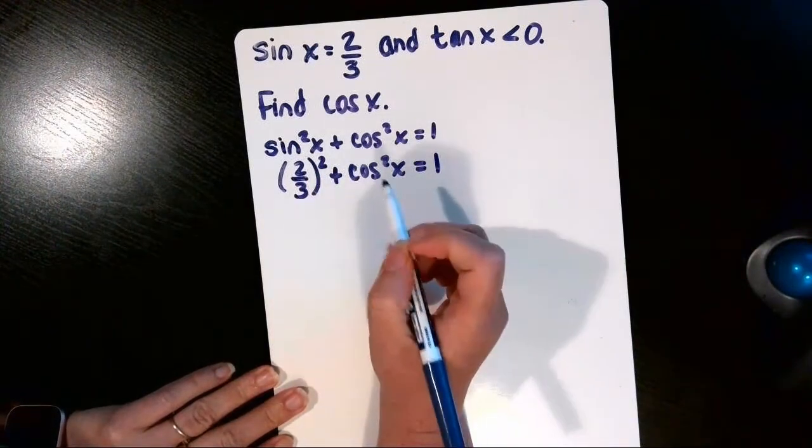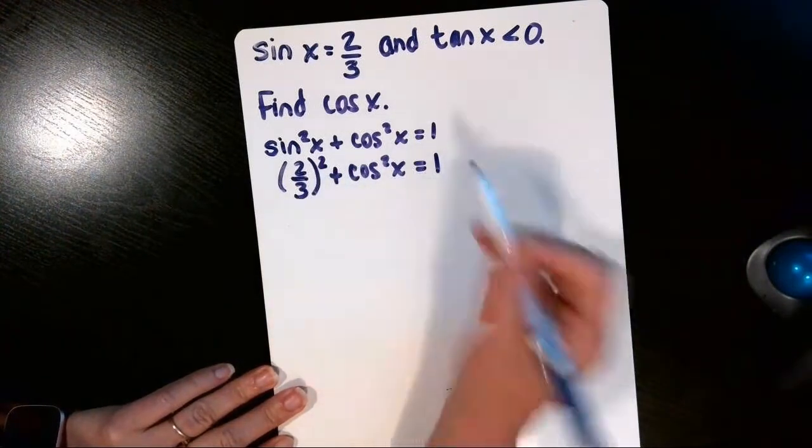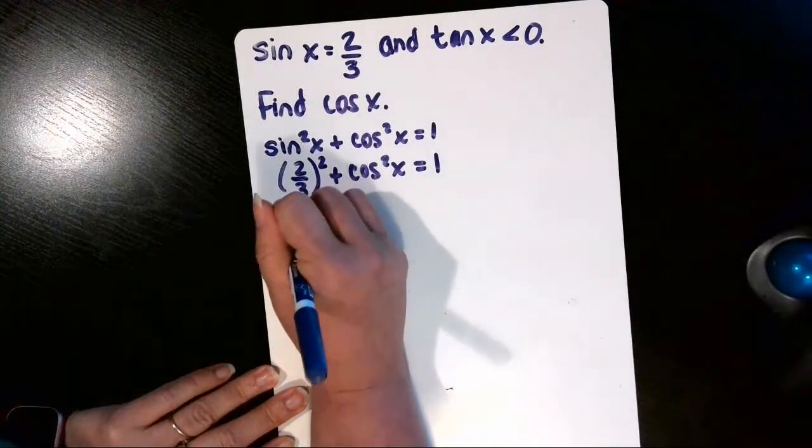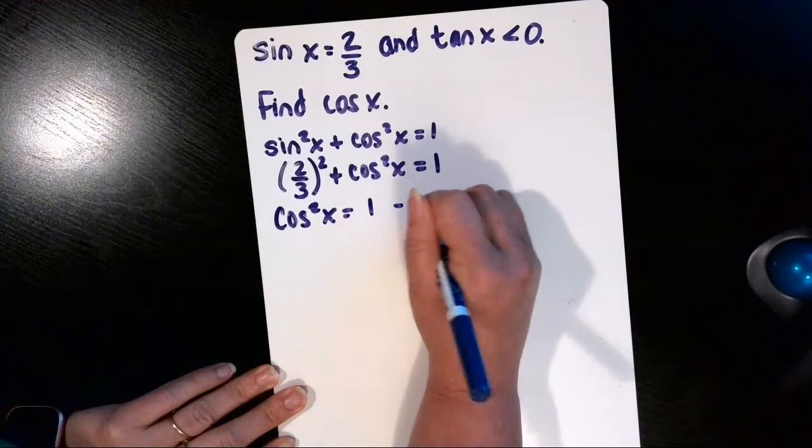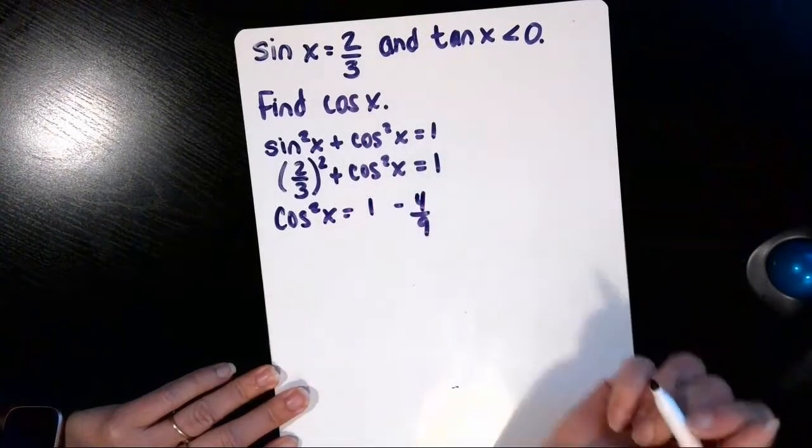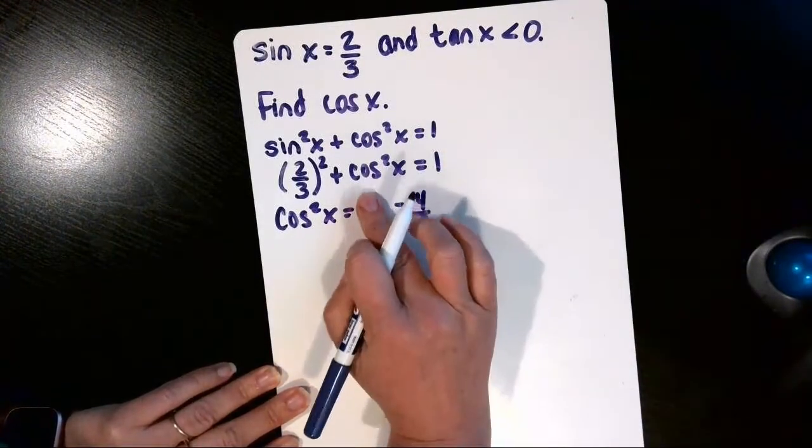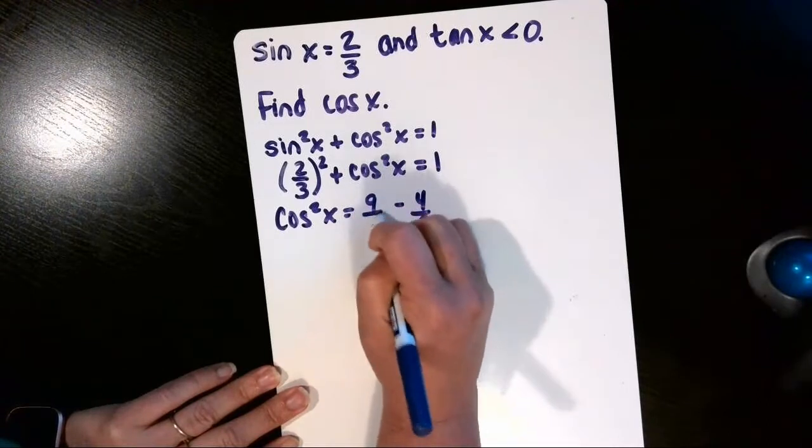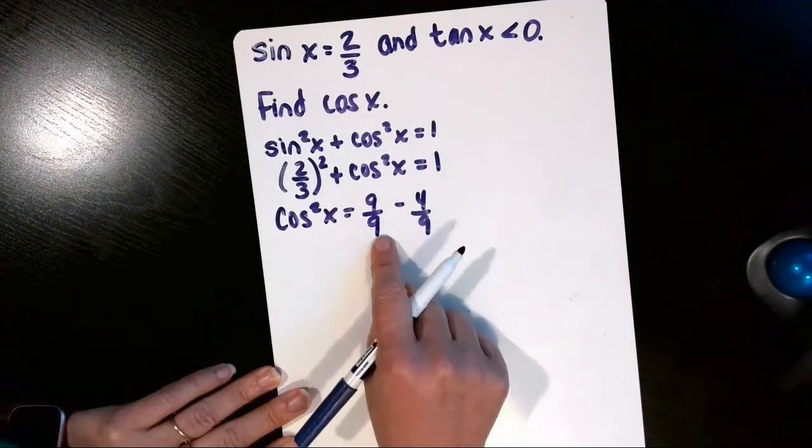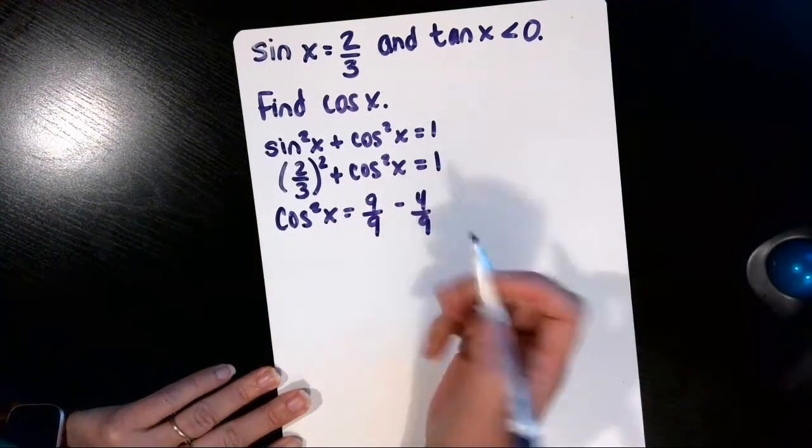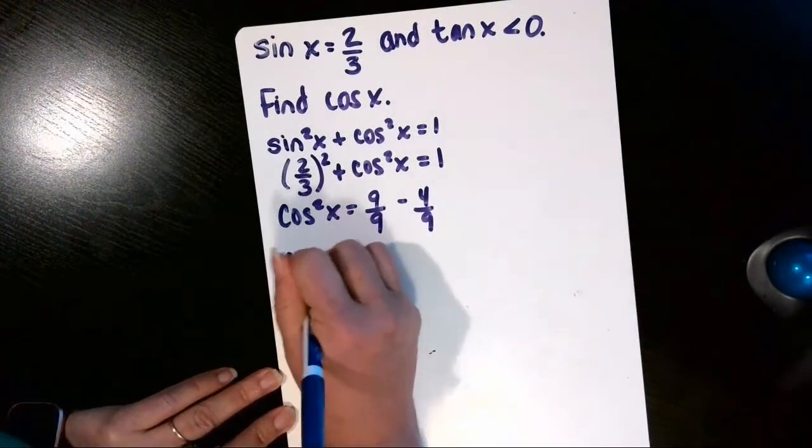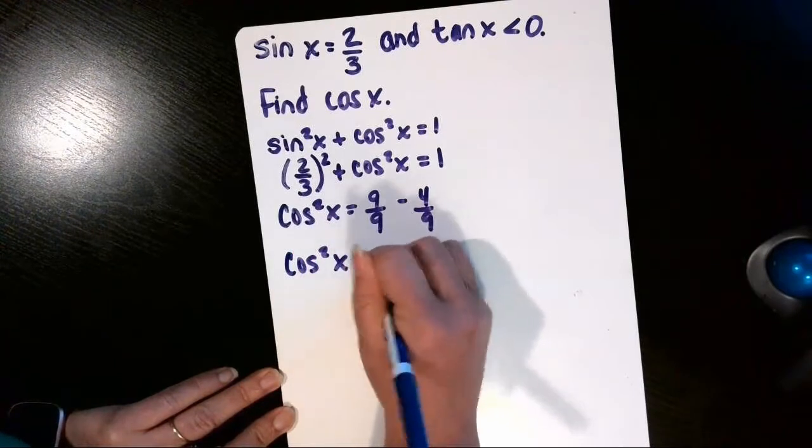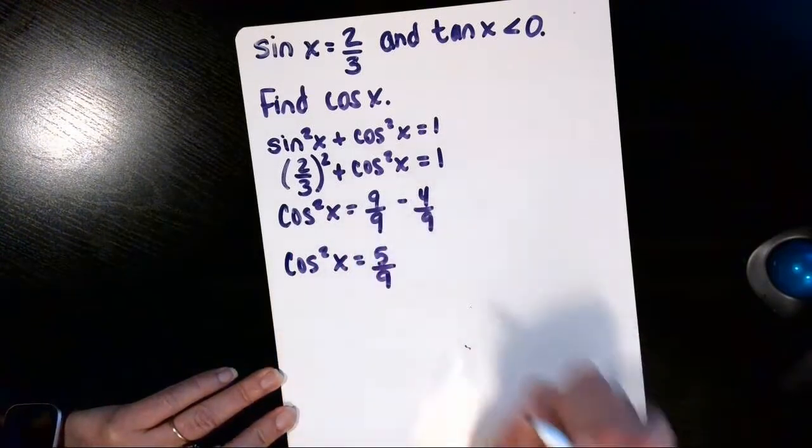2/3 times 2/3 is 4/9, but we're going to need to subtract that over to the other side. So cos²x equals one minus 4/9, and we need a common denominator in order to subtract. So 9/9 is equivalent to one, and then we can combine those numerators. Nine minus four is five, so cos²x equals 5/9.